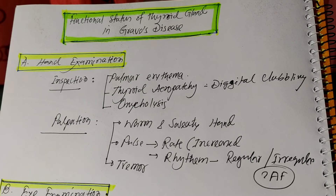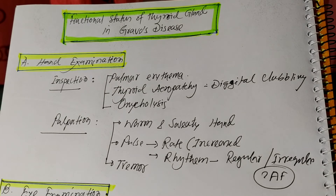The third point on palpation of the hand is tremor — that is, fine tremor of the outstretched hand. The patient is asked to outstretch his or her hand, and a piece of paper is placed on the hand. You will observe whether fine tremor is present or not.